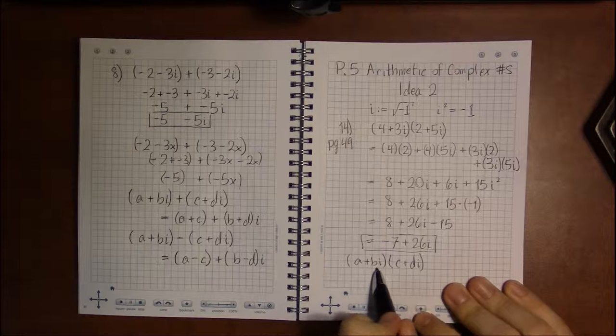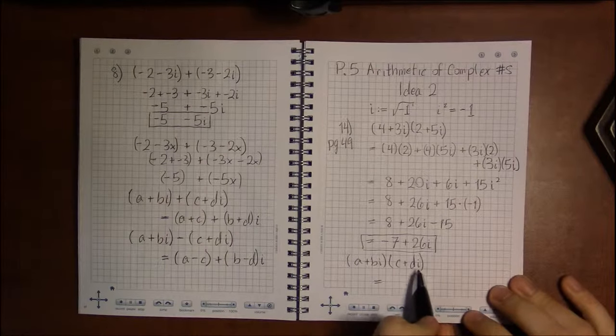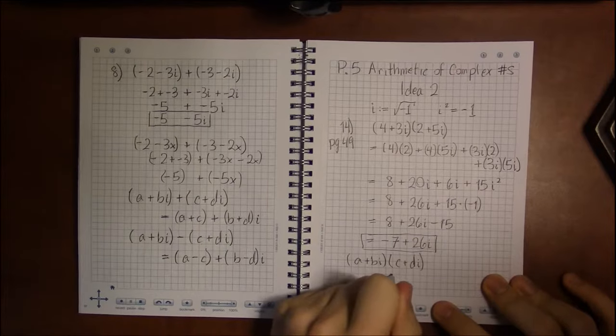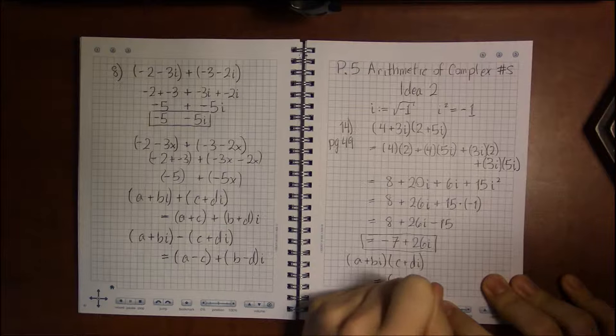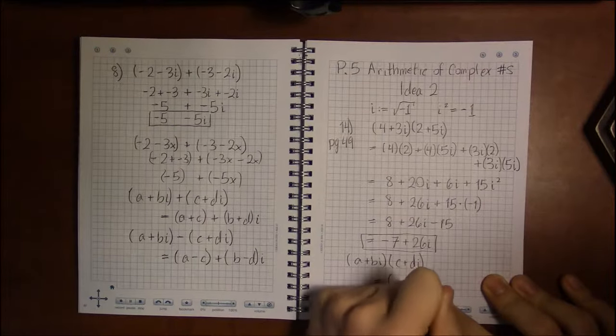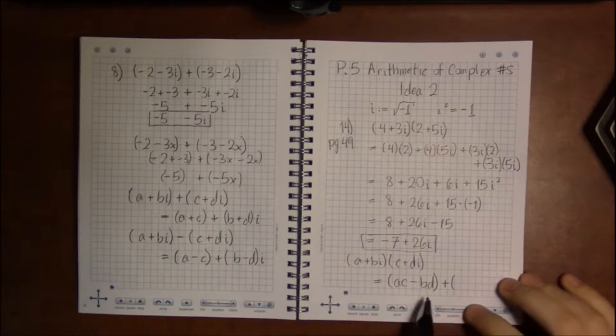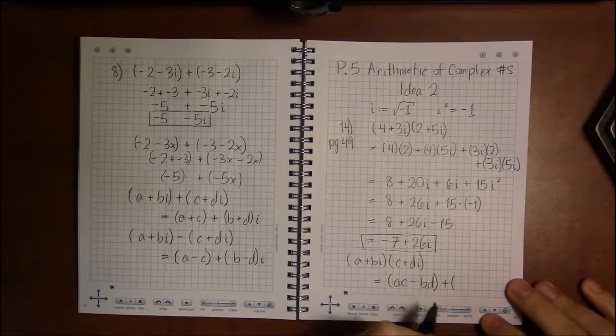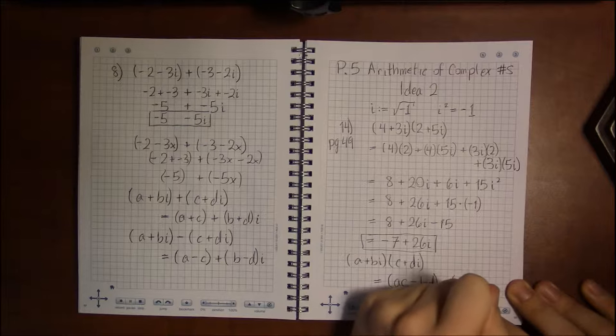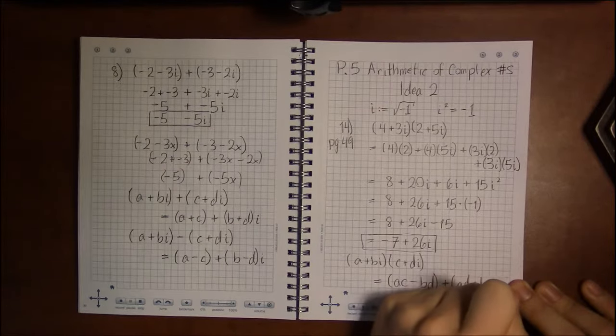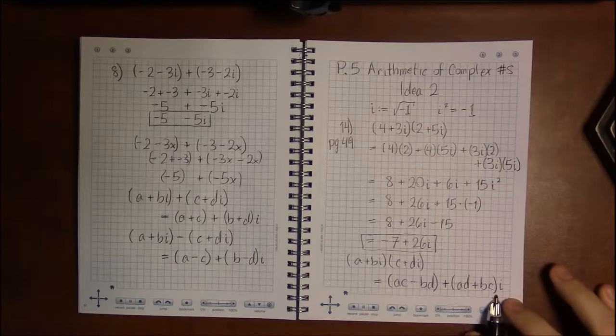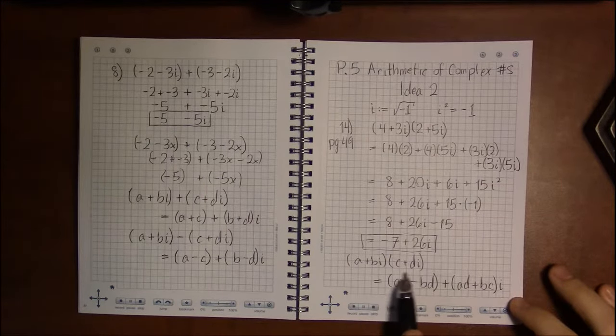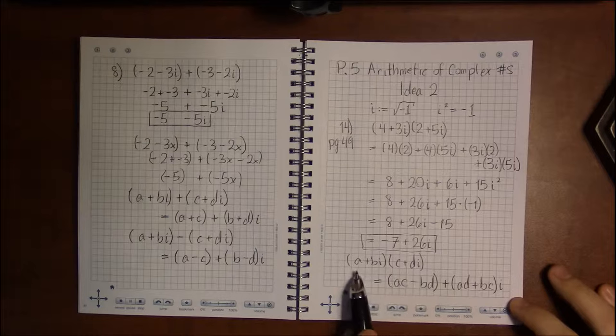One complex number, a plus bi, times another complex number, c plus di, is going to be the complex number ac minus bd. That's the real part. The imaginary part is ad plus bc. Told you it wasn't very pretty. The result is not very obvious. Not immediately obvious. Just looking at the left hand side. Kind of like addition and subtraction were.